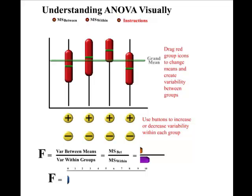The statistic we use is called the F-statistic, and it is measured by the variance between the means divided by the variance within the groups. A large F-statistic gives more evidence to at least one group having a different mean than the others.